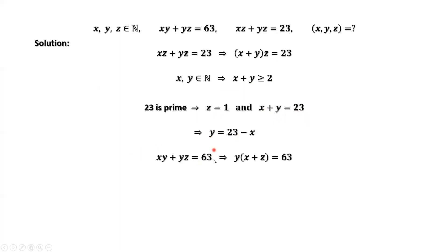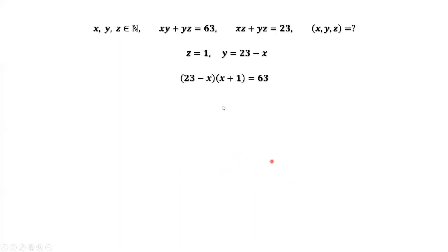This is the first given equation. xy plus yz equals 63. Factoring y out in the left-hand side of this equation, we have y times x plus z equals 63. We replace y by 23 minus x in the left-hand side. Simplify this equation. We have x squared minus 22x plus 40 equals 0.